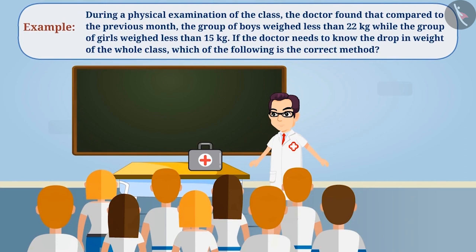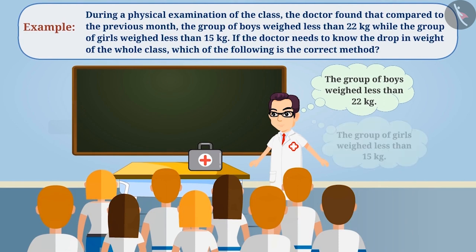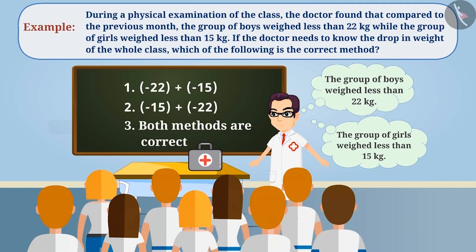During a physical examination of the class, the doctor found that compared to the previous month, the group of boys weighed less than 22 kg while the group of girls weighed less than 15 kg. If the doctor needs to know the drop in weight of the whole class, which of the following is the correct method?